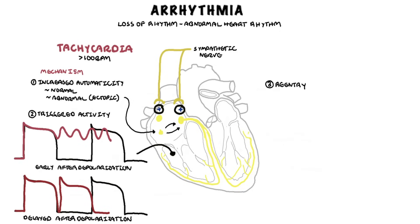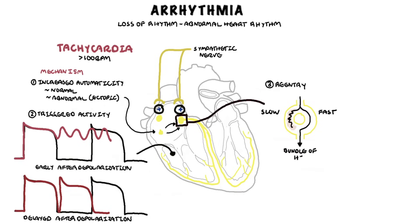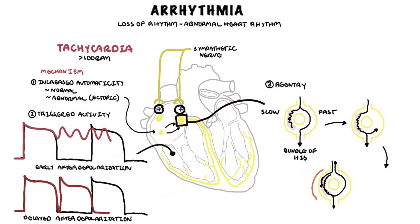Reentry is the major cause of tachyarrhythmias and is our third mechanism. Anywhere along the tract from the SA node to the ventricles, there can be heart fibers that are slow at sending the propagating impulse. The normal fast tract will send impulses and continue down towards the bundle of His, while the slow impulse catches up. Eventually, the fast tract will enter its refractory period. The slow impulse will eventually continue and will be able to re-excite the fast tract fibers after its refractory period, triggering a re-entry circuit that can be sustained, resulting in arrhythmia.